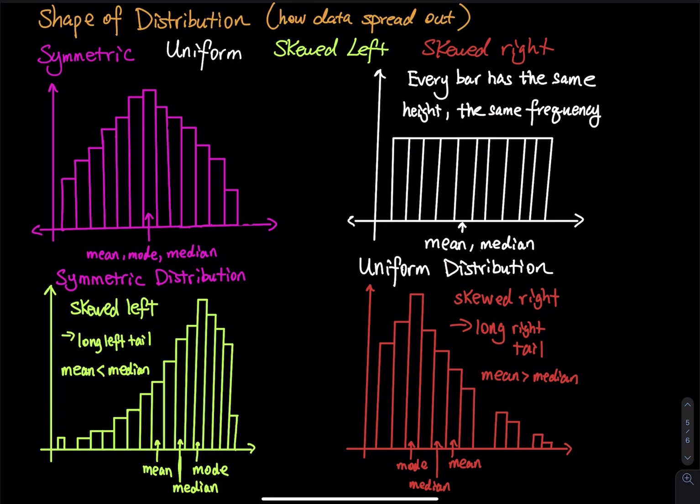In a skew right distribution, we have a tall mountain on the left and a long tail on the right. The mode is always the tallest bar. In a skew right distribution, the mean is greater than the median.